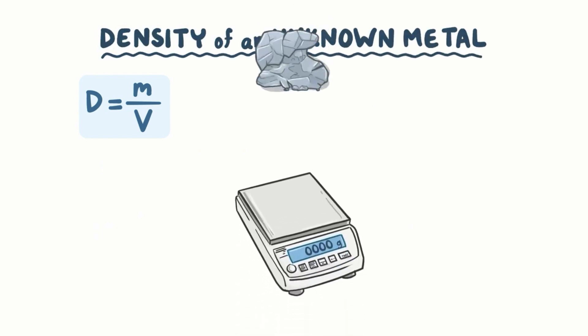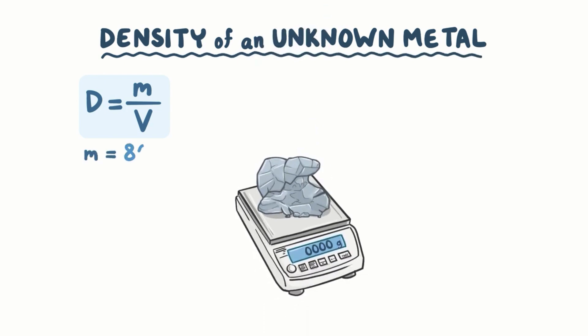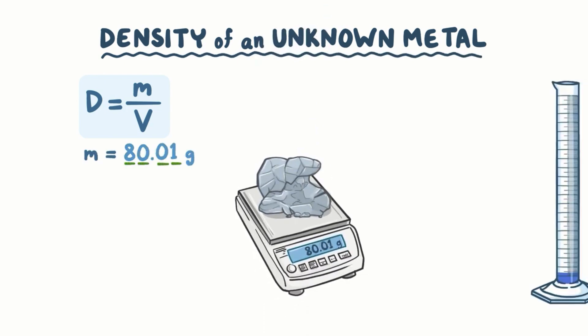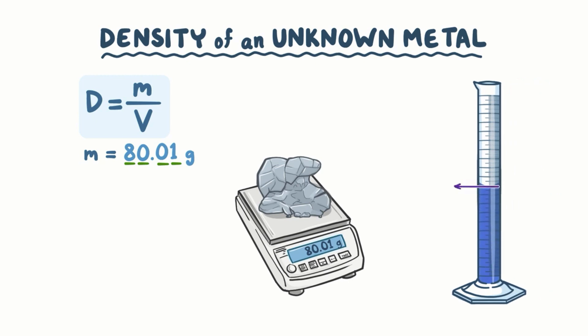So now let's use our knowledge of significant figures to calculate the density of an unknown metal. Suppose we take a piece of metal and put it on a balance. The balance gives us a mass of 80.01 grams. That's 4 significant figures. Next let's say that we fill a graduated cylinder with water to a level that reads 20.00 milliliters. Then we put the unknown piece of metal into our graduated cylinder, causing the water level to rise up to 27.61 milliliters. The volume of the object can be identified by subtracting the two readings, 27.61 minus 20.00 milliliters, to get a volume of 7.61 milliliters for our unknown metal.